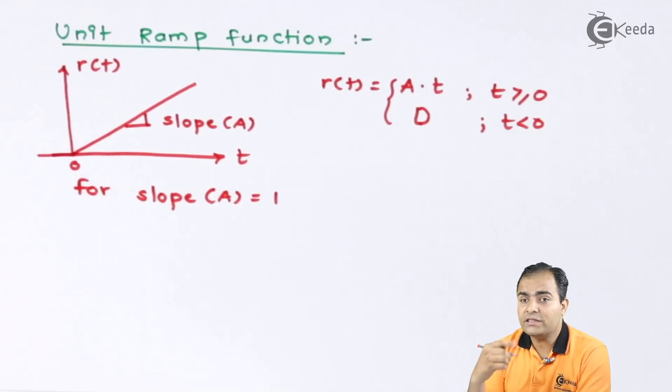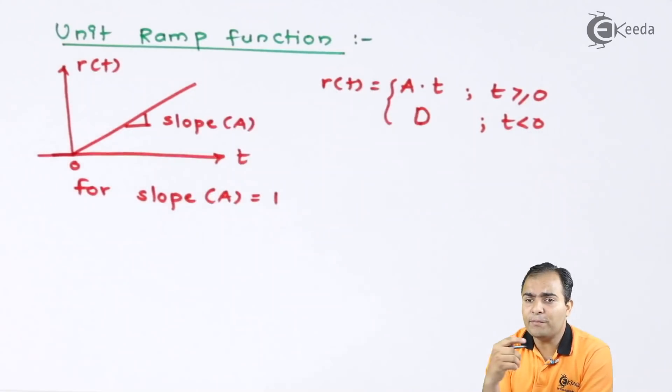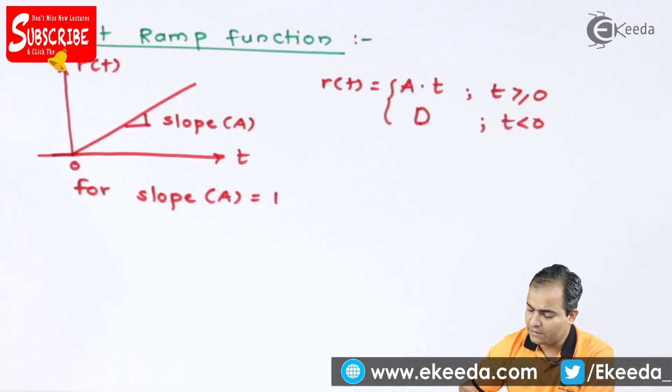Now, if we change the value of slope, that is right now I have considered the slope value is 1. Then your R(t) value changes its amplitude by 1, 1, 1. Let's see.